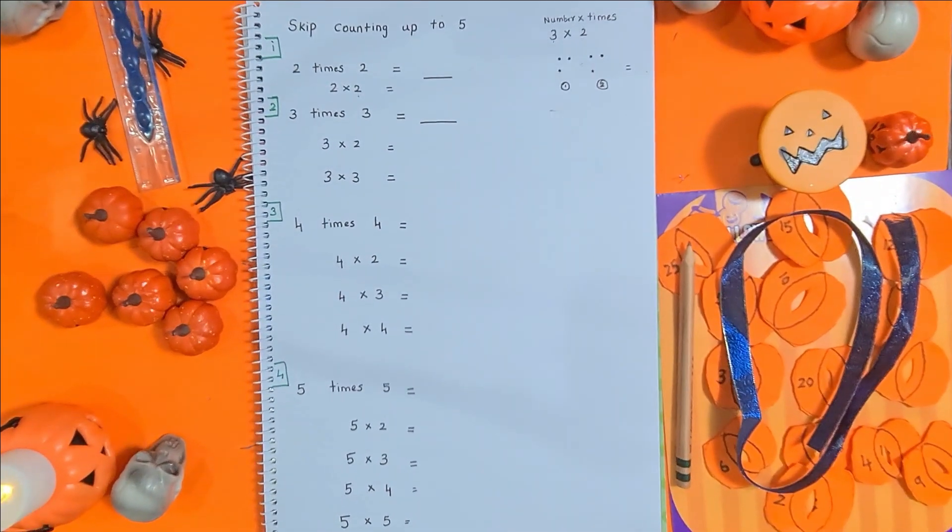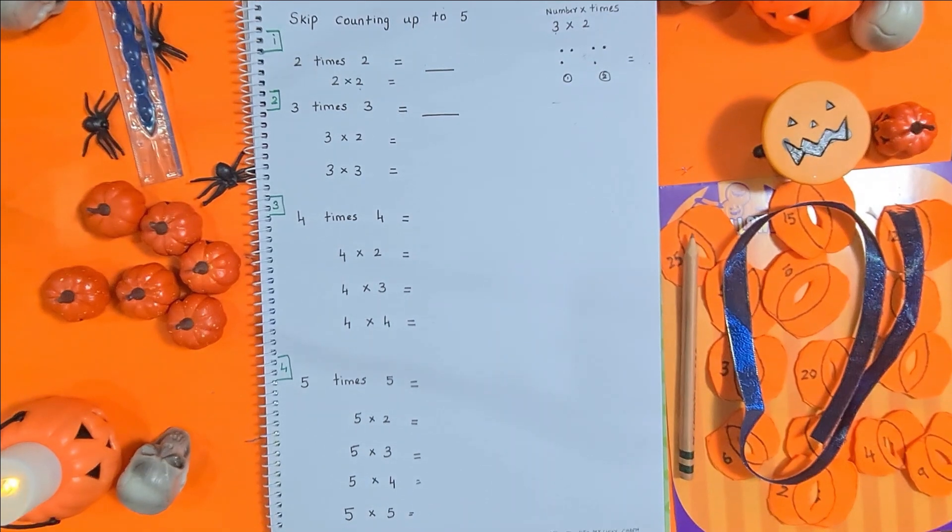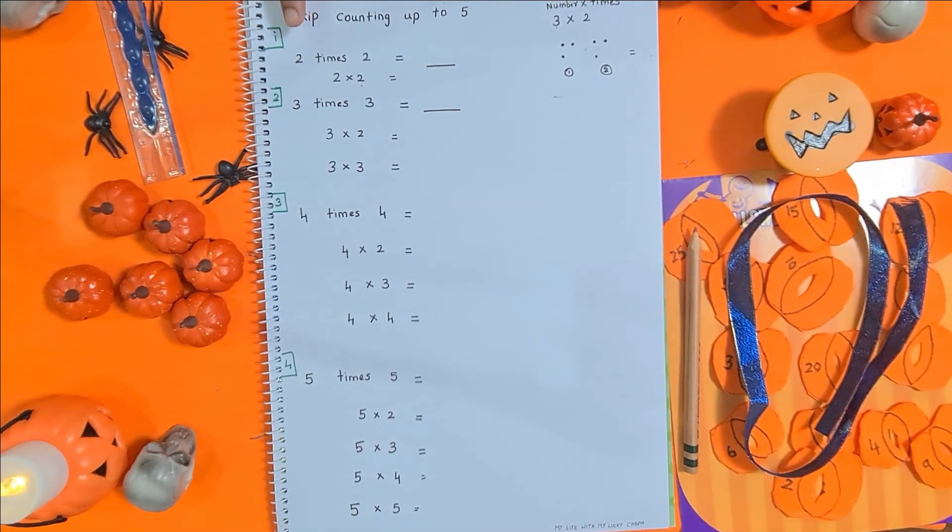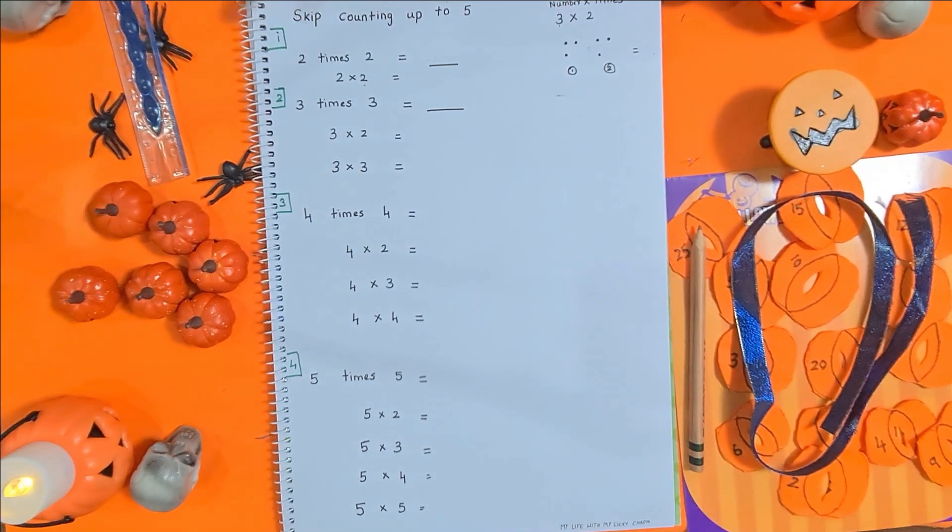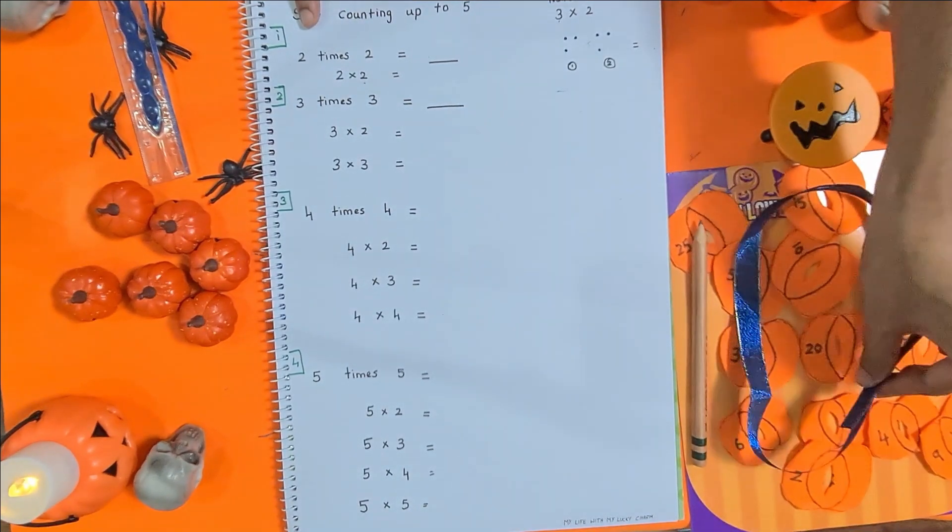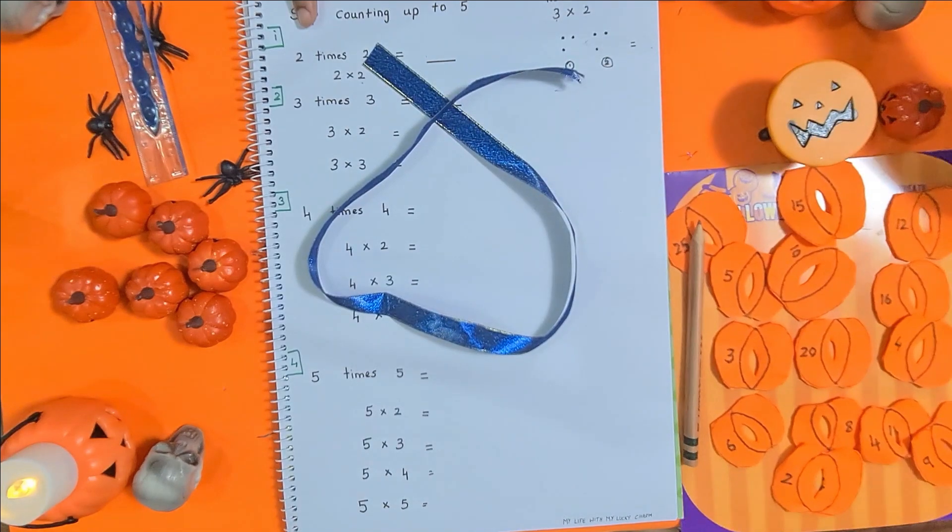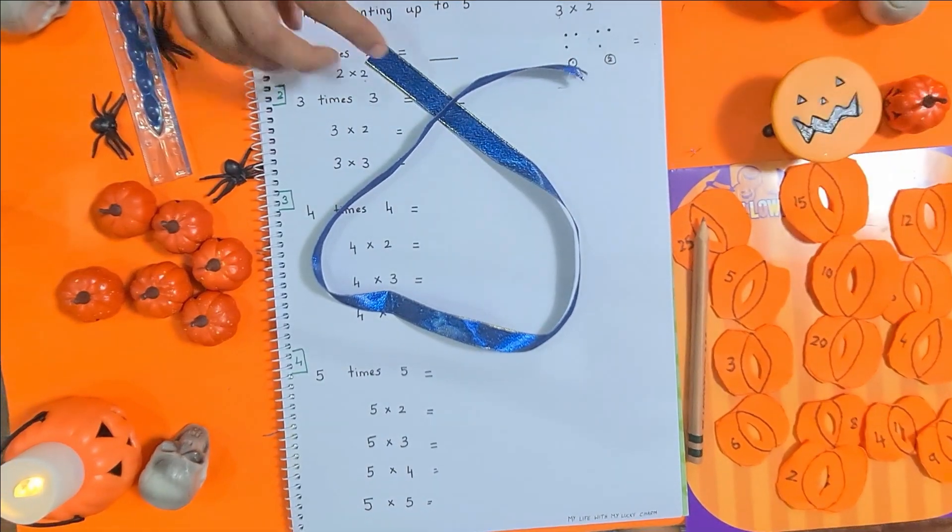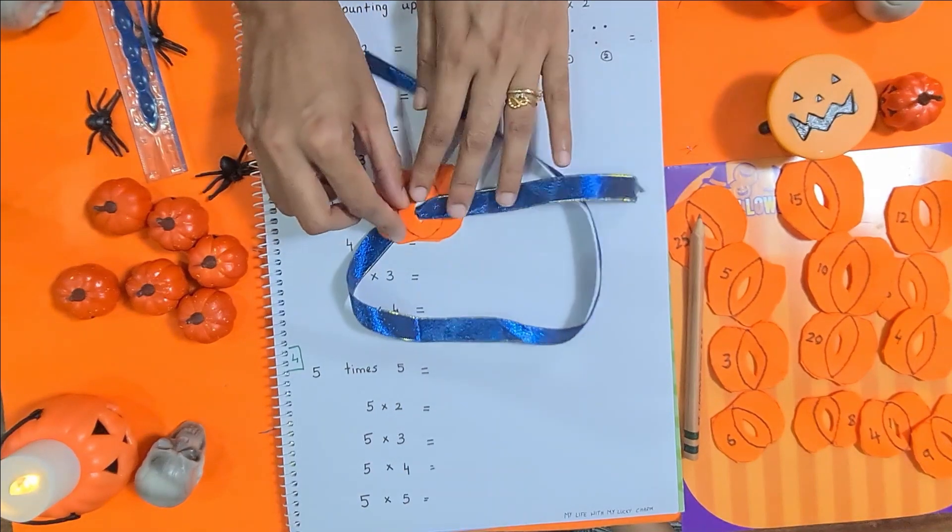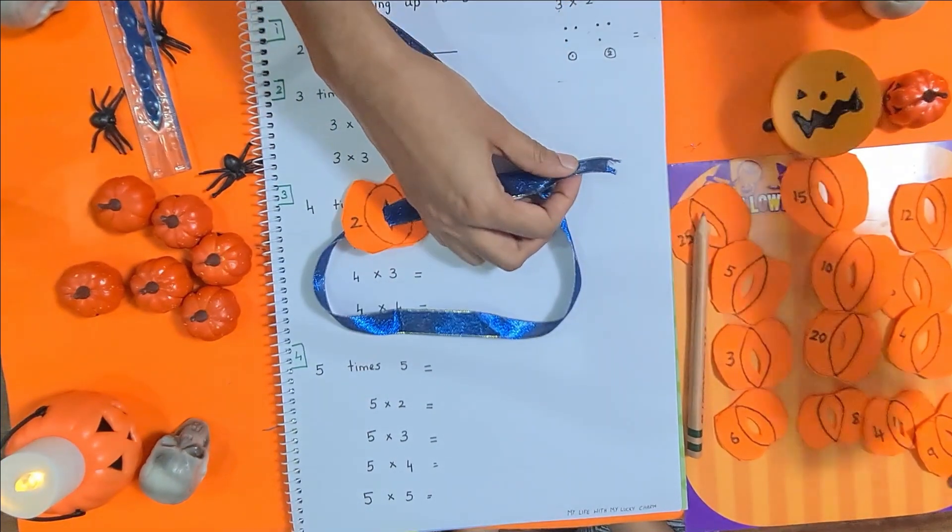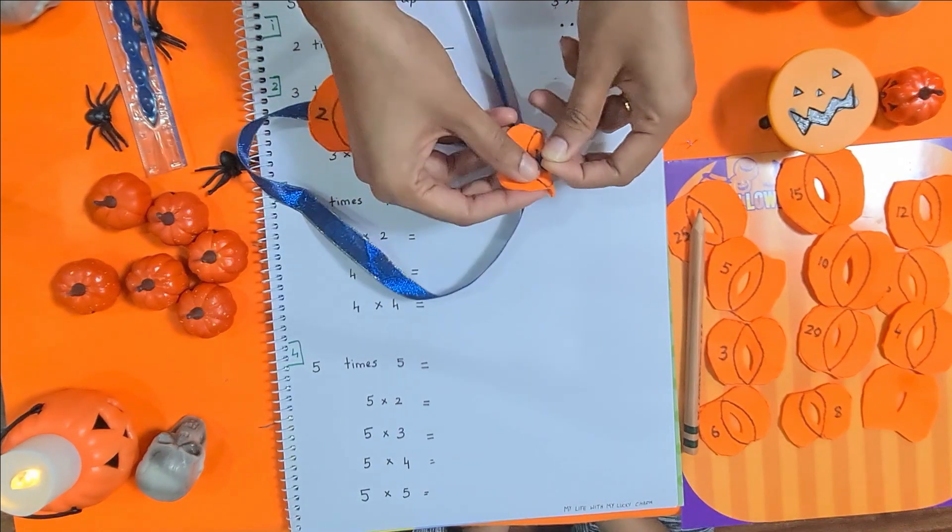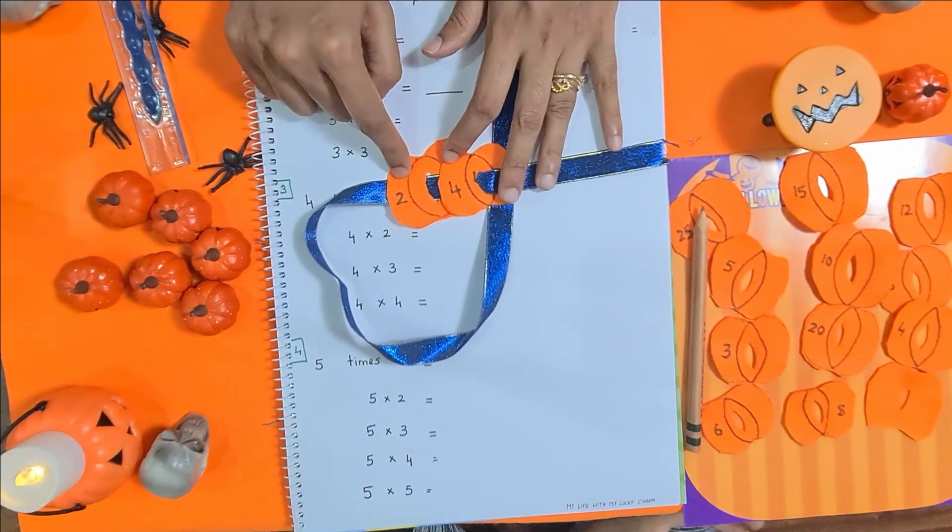The next activity is skip counting up to five. Aram has been trained the Montessori way for skip counting. If anyone needs the video of the same, please let me know in the comment box below. Here, what exactly he needs to do is it's just a simple counting of two, three, four, and five. Two times two, and here I have provided the lace and some jack-o'-lantern number cuts. For example, if it's two times two, he just needs to lace it like this. Two times two is four, and he needs to write the answer here.